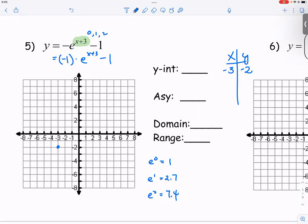And then to create a value of an exponent of 1, we would need the x to be negative 2. So negative 2 plus 3 is 1. E to the first power is 2.7. And then we have a negative sitting in front. So negative 2.7 minus 1, which will give you negative 3.7. So at negative 2, it's negative 3.7.